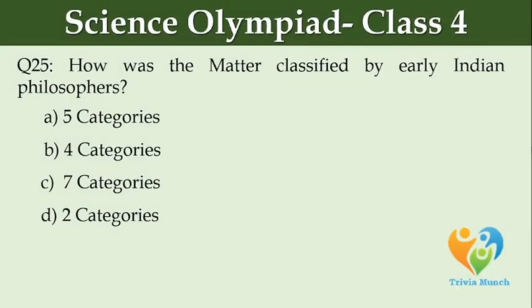How was matter classified by early Indian philosophers? Option A: five categories. Option B: four categories. Option C: seven categories. Option D: two categories.